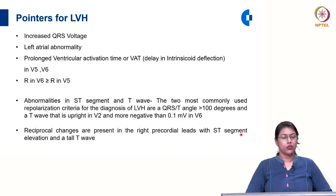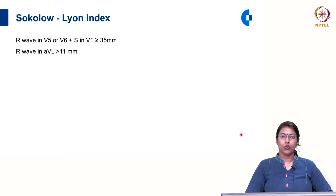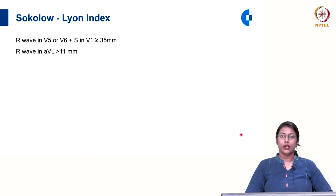Reciprocal changes are also present in right precordial leads with ST elevation and a tall T wave. The most commonly used criterion in clinical practice is the Sokolow-Lyon index: the amplitude of R in V5 or V6 plus the amplitude of S in V1, if more than or equal to 35 millimetre, is suggestive of LVH. If the amplitude of R wave in AVL is more than 11 millimetre, that is also suggestive of LVH.